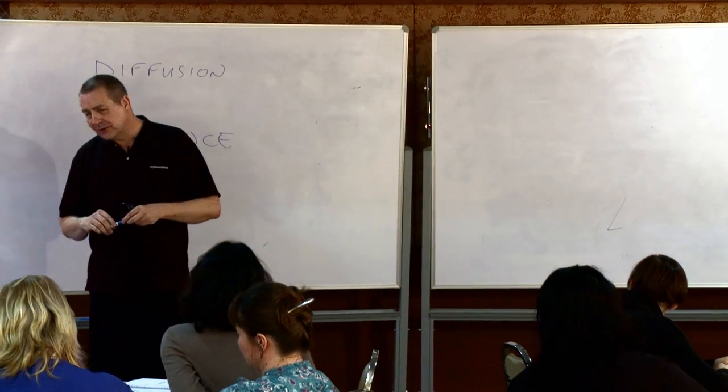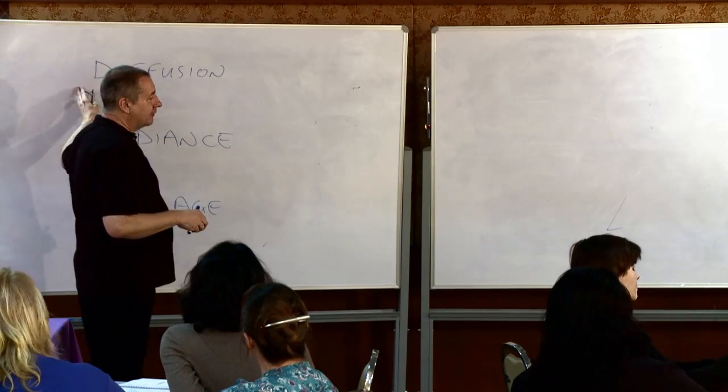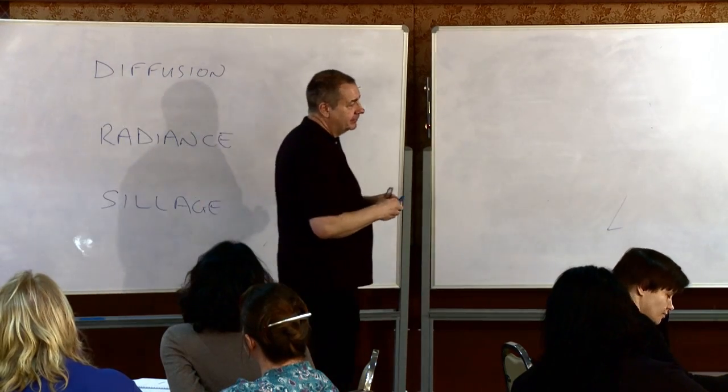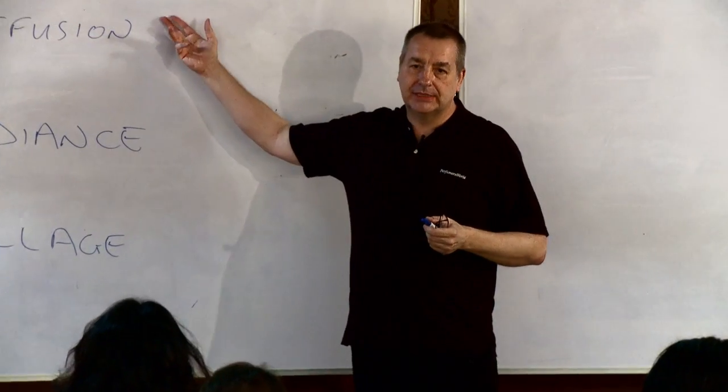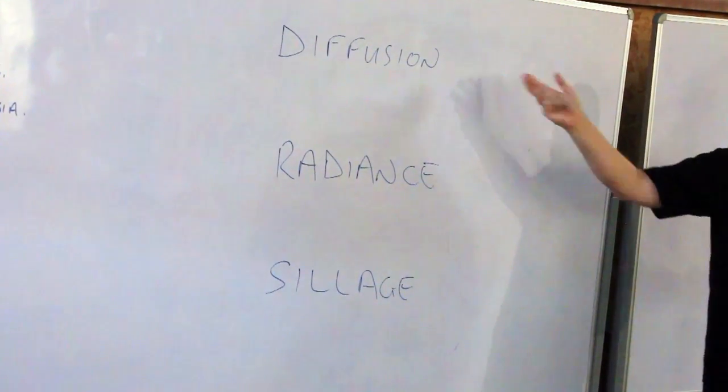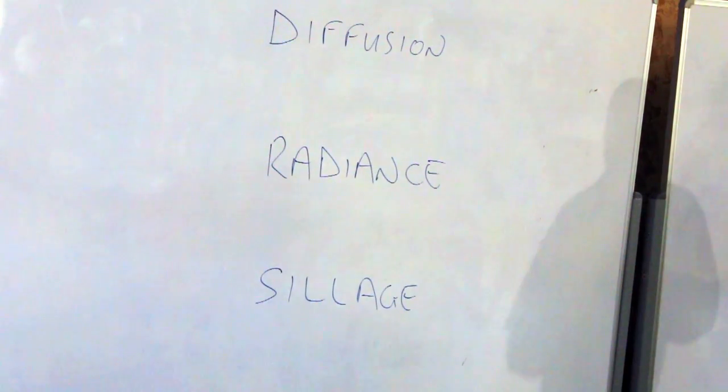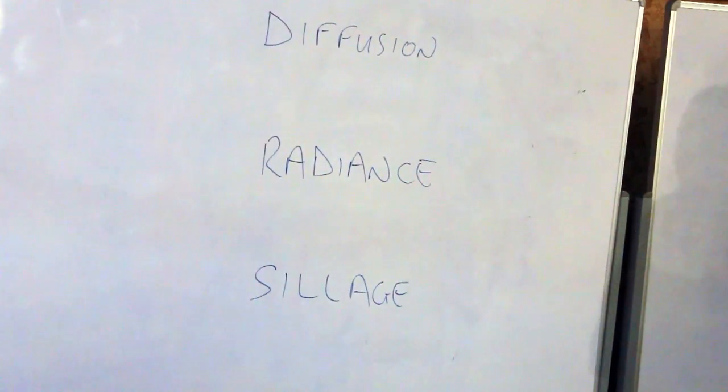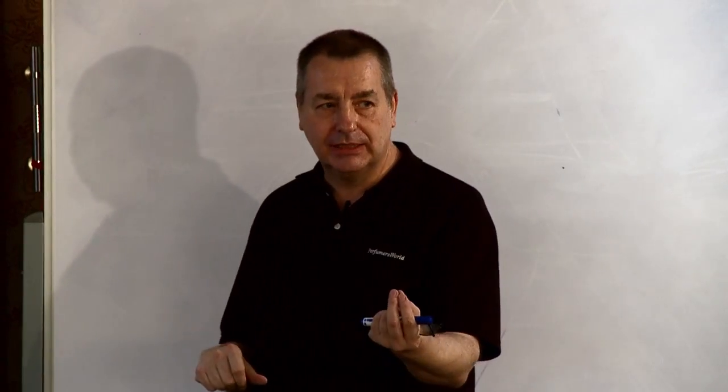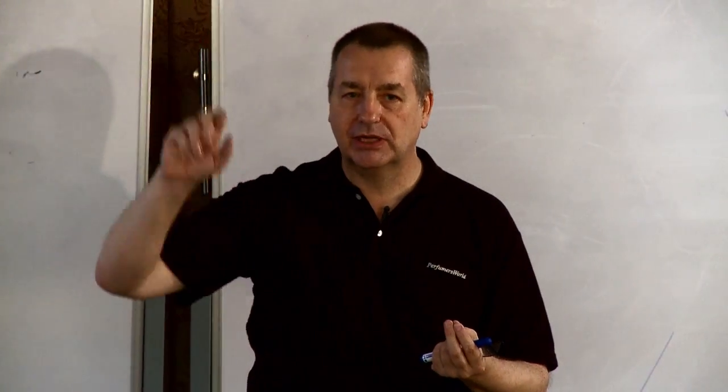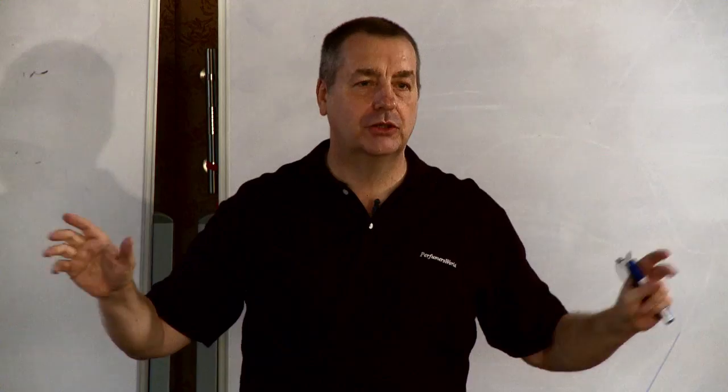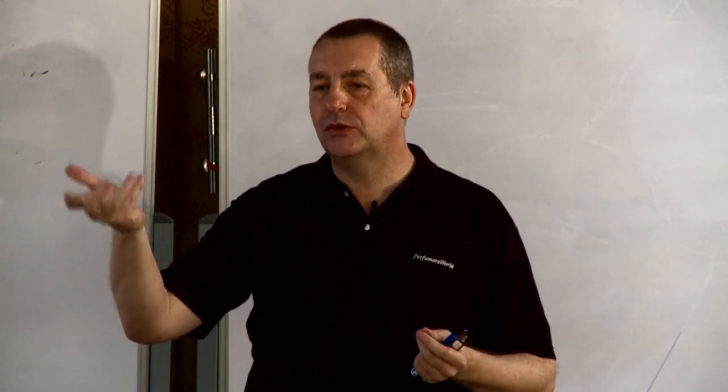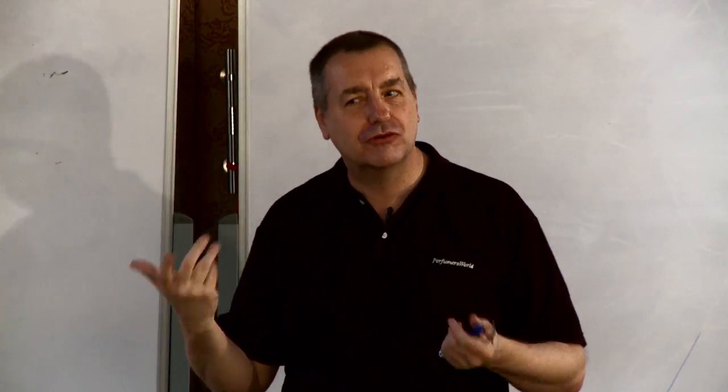So these are three things we look for in a perfume. Now the word diffusion is not exactly the chemistry definition. Diffusion is like isoamyl acetate - you dip it and then it disappears really quickly, but it diffuses in the room so you can smell it over there. But within a few seconds it's gone, that's not interesting for a perfume.